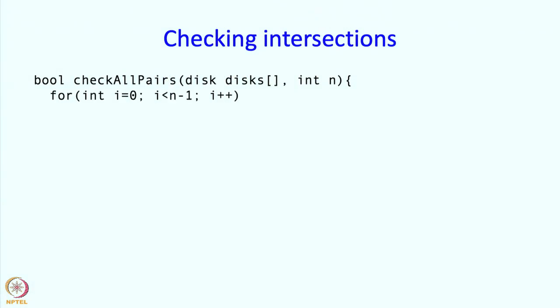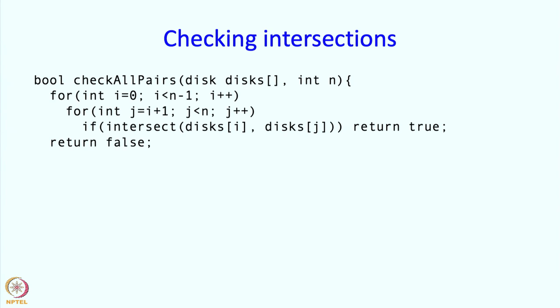Then we're going to check intersections. Check all pairs, or maybe I could have called it check all intersections, that might have been an even nicer name. There are n disks which are passed as arguments, and then we go over all pairs. We discussed this last time when we solved this problem earlier, that we have to have two indices i and j. i should go from 0 to n-2, and therefore we've written i less than n-1, and j should go from i+1 to n-1. For each such pair, we need to check whether those pairs intersect. If they intersect, we return true. If the loops execute without finding an intersection, then control will reach this point, and at that point we know that no intersection was found, so we can return false.